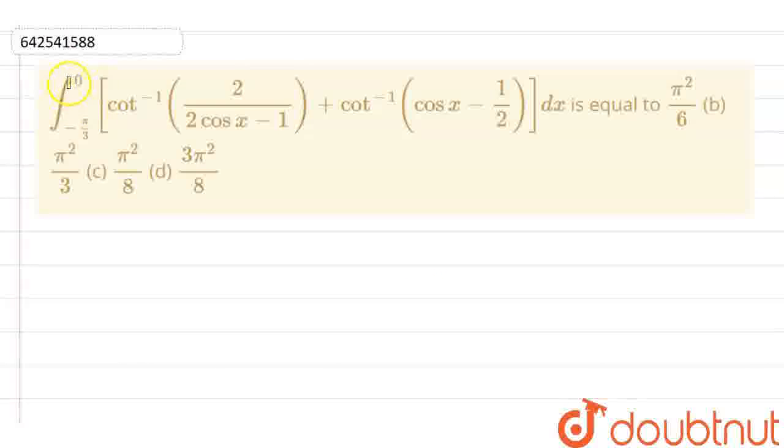Hello everyone, in this question we have integration with limit 0 to minus pi by 3 and in place of function we have cot inverse 2 by 2 cos x minus 1 plus cot inverse cos x minus 1 by 2 bracket dx is equals to what?